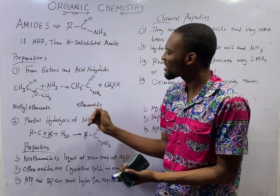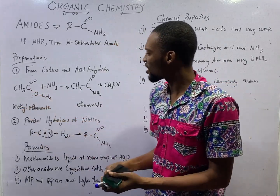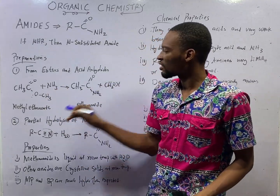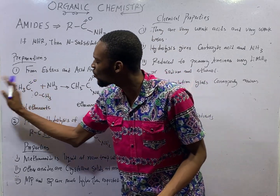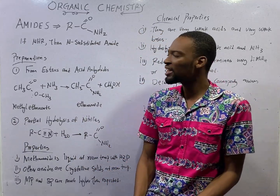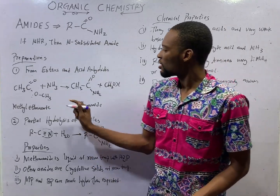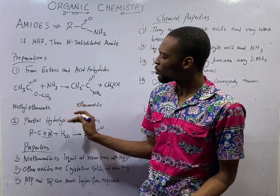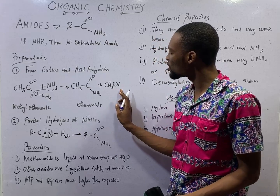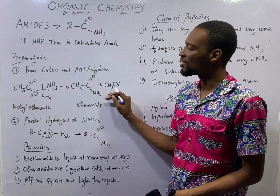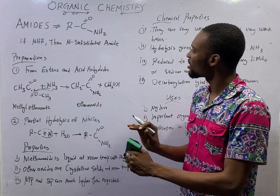Amides can be prepared from esters, acyl halides, and acid anhydrides. When an ester — this is methyl ethanoate, the methyl group and the acyl group has two carbons — reacts with ammonia, they will form an amide and an alcohol. Ammonia has three hydrogens. One of the hydrogens in ammonia will come here to form OH, giving us CH3OH — that is an alcohol, methanol in this case. The remaining NH2 will come to give you NH2 here. What has been formed? Amides.